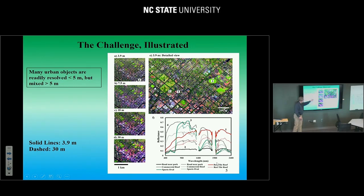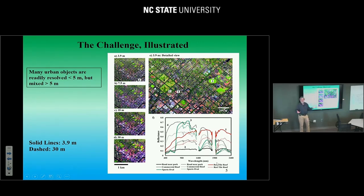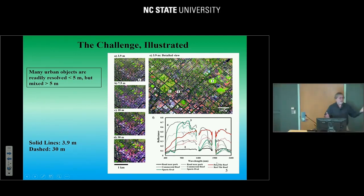At the classic 30-meter Landsat resolution, you really don't easily see individual buildings and roads. Looking at the spectra, some translate easily because they're large objects, but a road looks like a plant at 30 meters — because there is no road simply 30 meters across unless you're in the heart of Los Angeles. The dotted lines are the 30-meter versions, and you can see this confusion between spectral signatures.